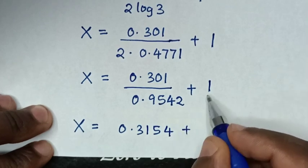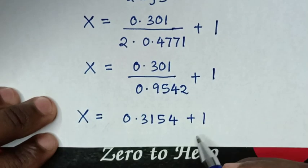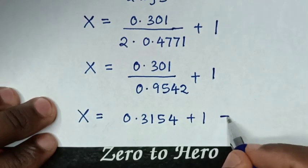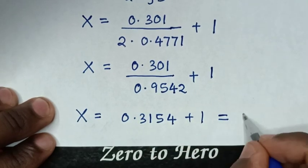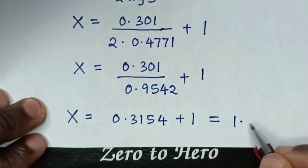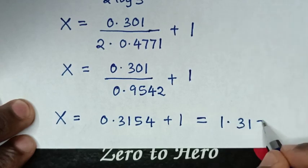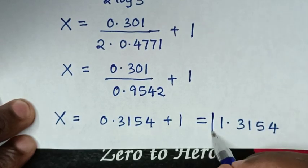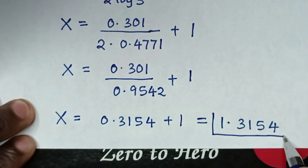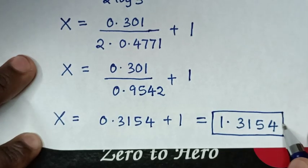Then it will be x is equal to 0.3154 plus 1, which gives 1.3154. Therefore, this is the final answer for the value of x in this problem.